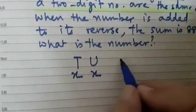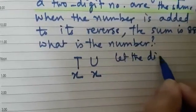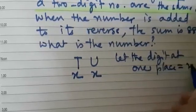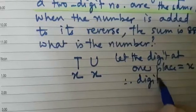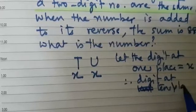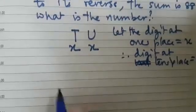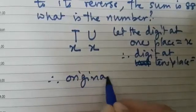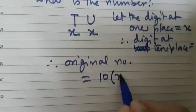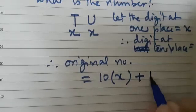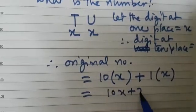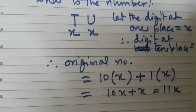If the digit at ones place is equal to X, therefore digit at tens place will also be equal to X. So what will be the original number? Therefore, original number will be 10 multiply by digit at the tens place plus 1 multiply by digit at the units place. So that is 10X plus X. We can write it as 11X.